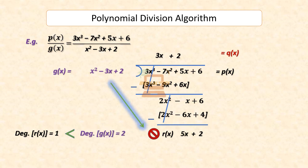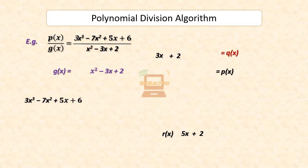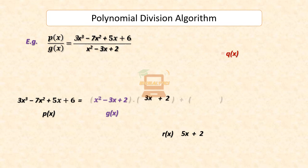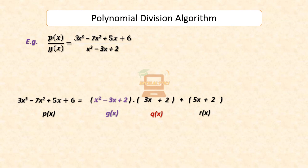In this example, the final quotient is 3x plus 2, and remainder is 5x plus 2. So we can write: the dividend 3x cubed minus 7x squared plus 5x plus 6 is equal to the divisor x squared minus 3x plus 2 times the quotient 3x plus 2, plus remainder 5x plus 2.